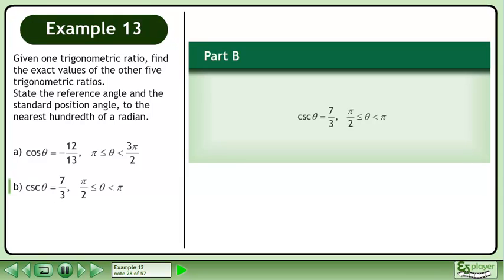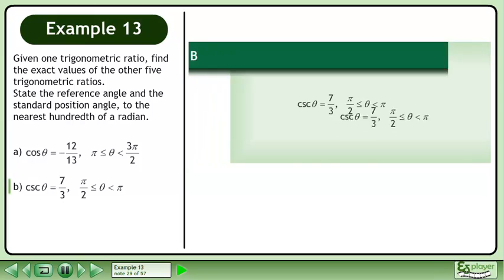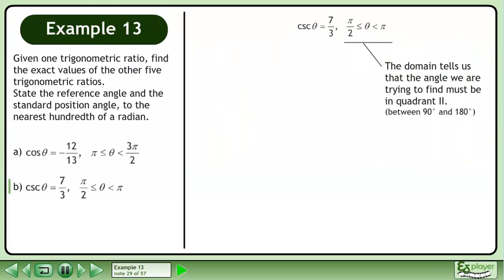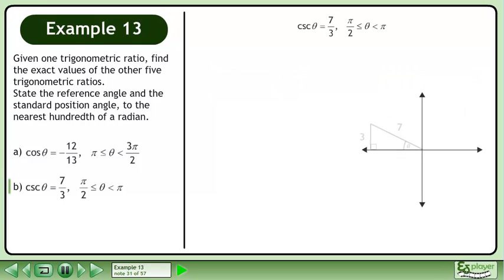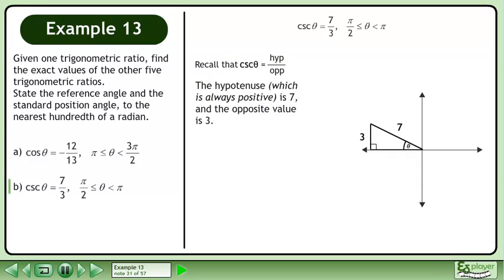In part b, we have cosecant theta equals 7 over 3, and the angle theta must be between π over 2 and π. The domain tells us that the angle we are trying to find must be in quadrant 2, between 90 degrees and 180 degrees. The cosecant ratio can be used to draw the sides of a triangle. Recall that cosecant theta is hypotenuse over opposite. The hypotenuse, which is always positive, is 7, and the opposite value is 3.